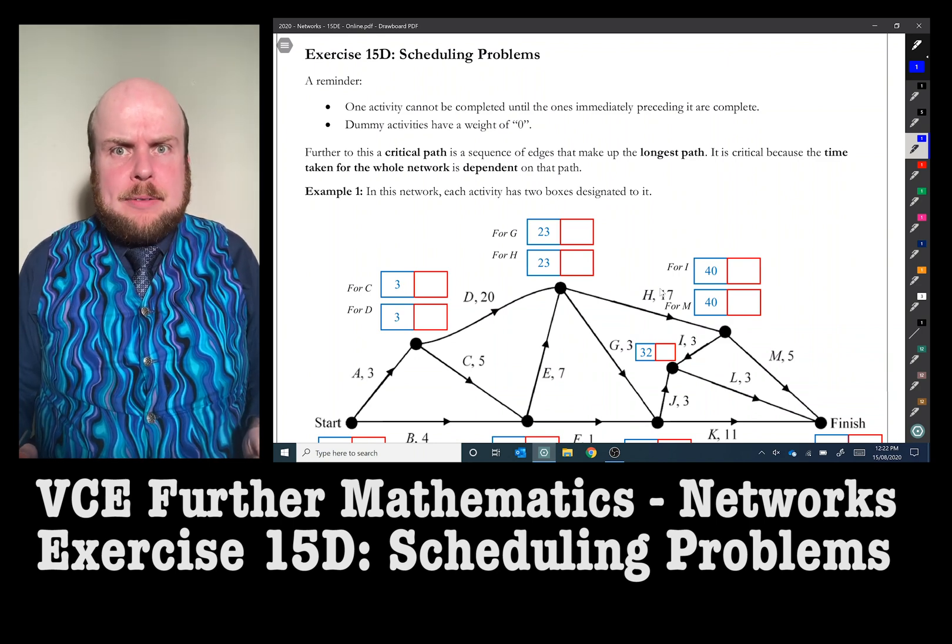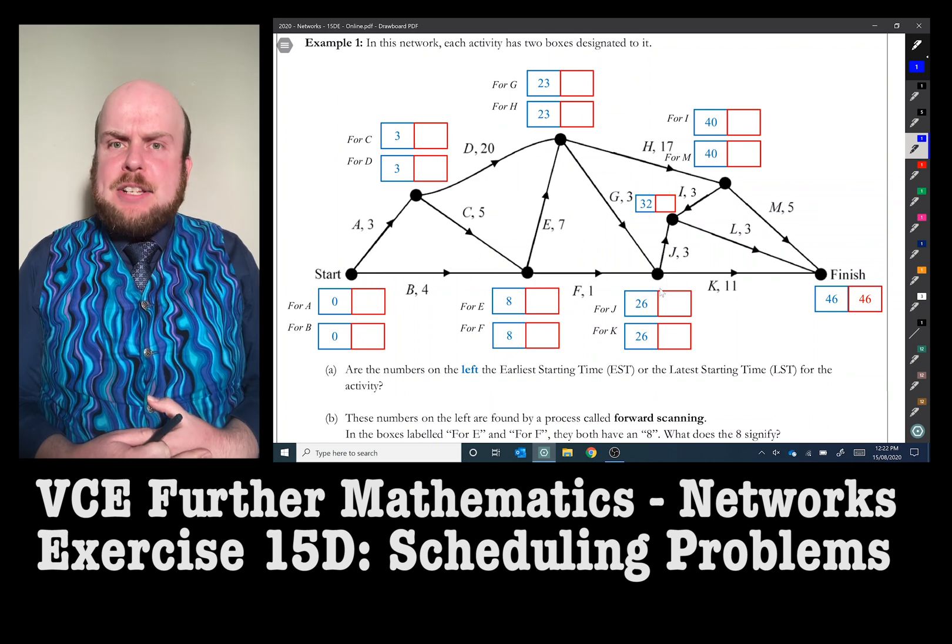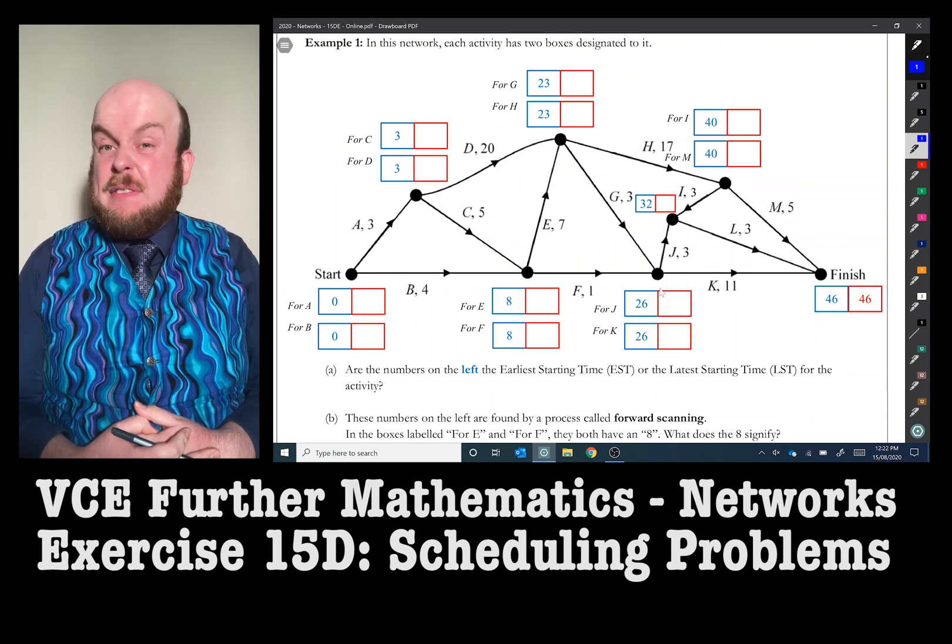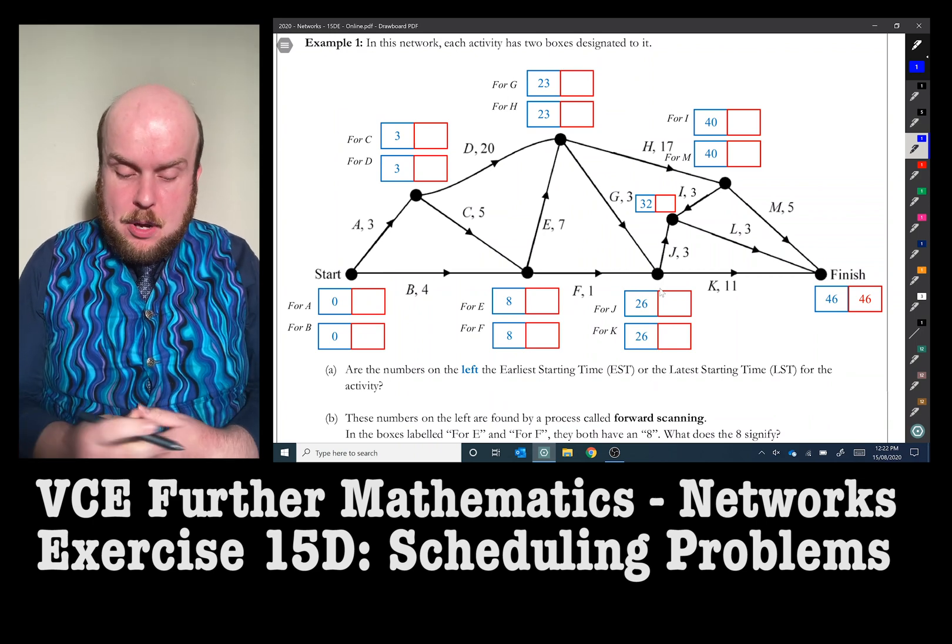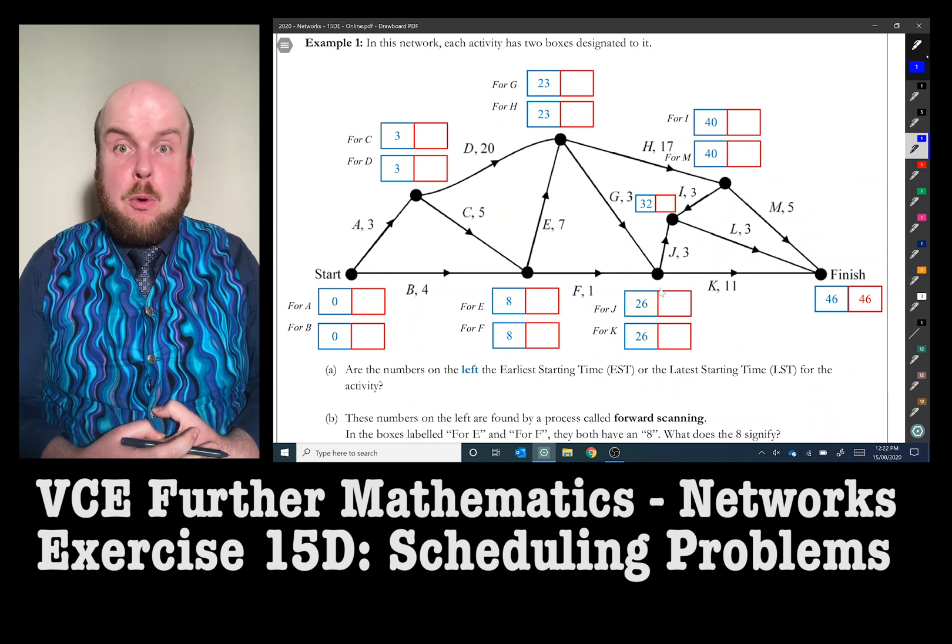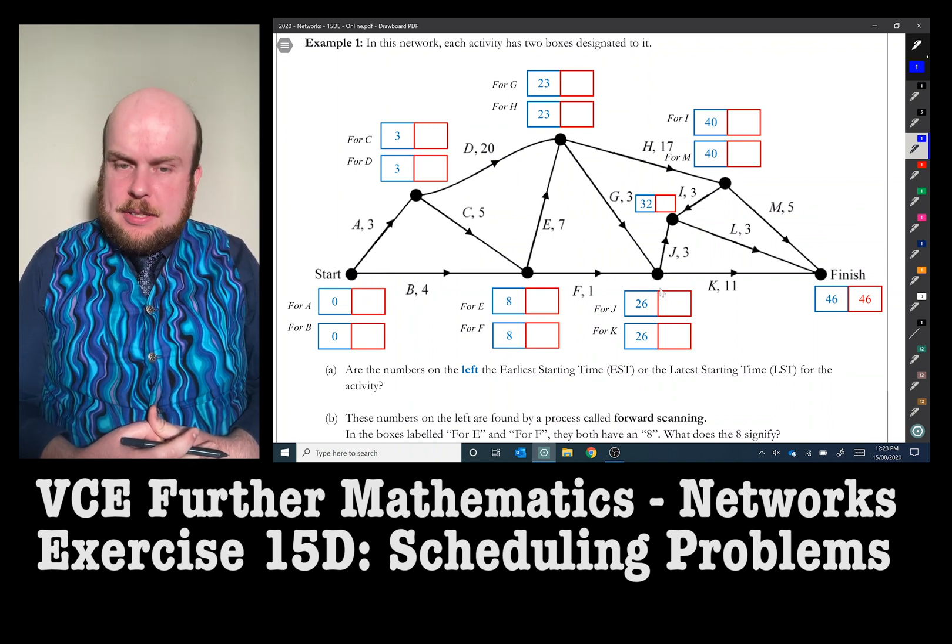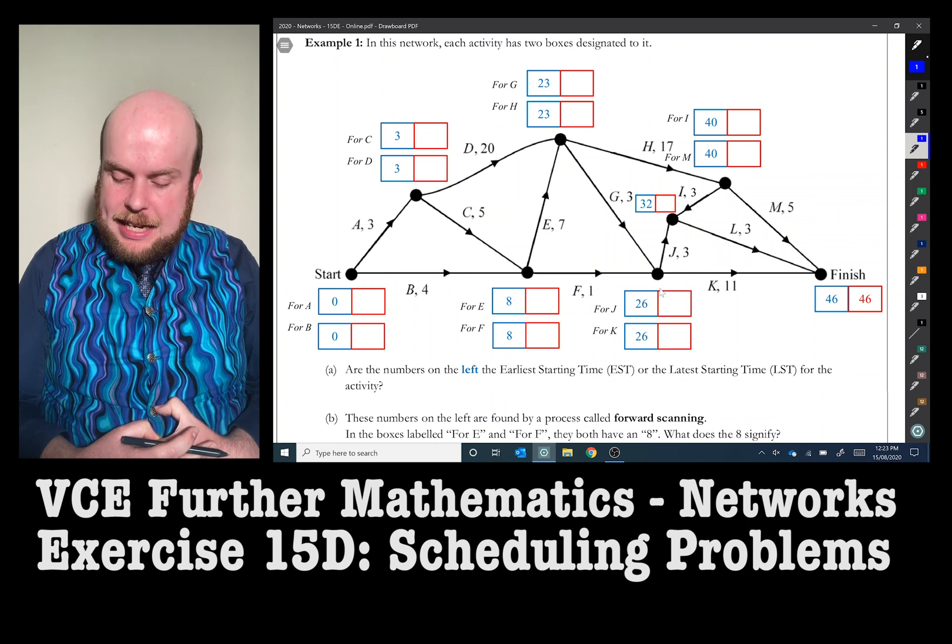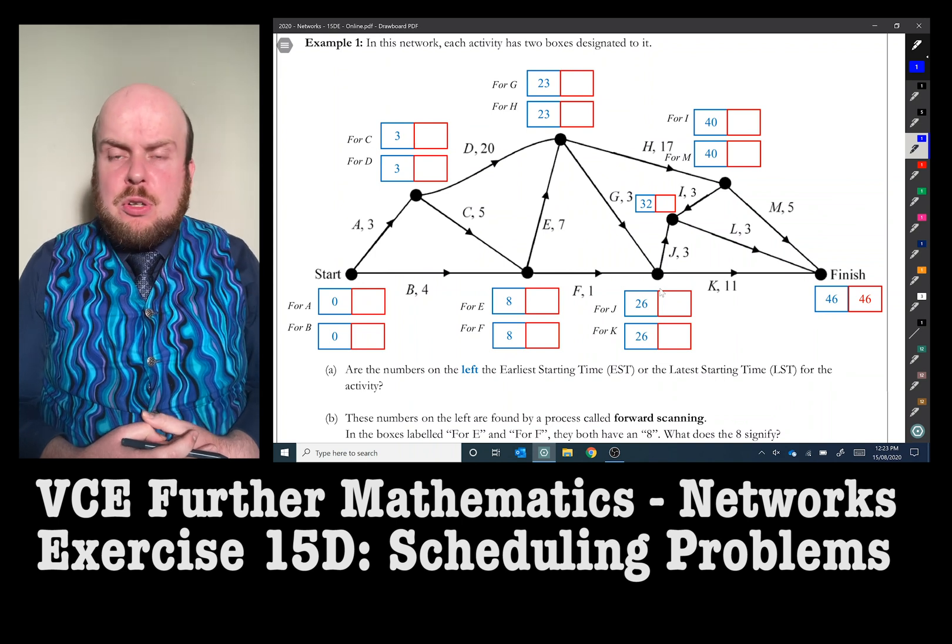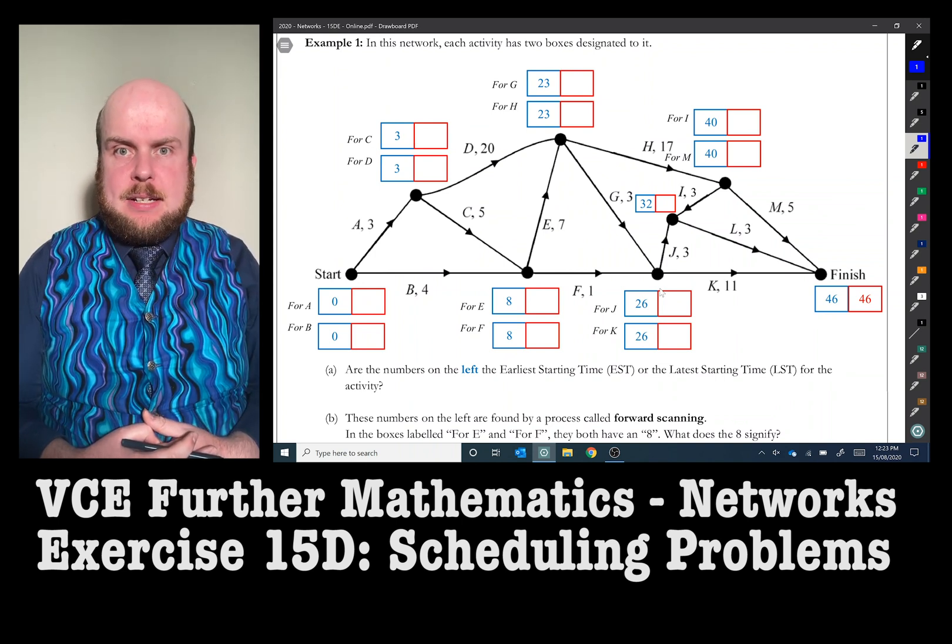Let's have a look at example one. In this network, each activity has been has two boxes designated to it. In fact, actually, it's been designated quite more except for there's one activity that's only got two boxes, the rest have got four. Are the numbers on the left, the earliest starting time EST or the latest starting time for the activity? So you given logic, what on earth does an earliest starting time mean and a latest starting time?